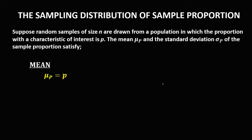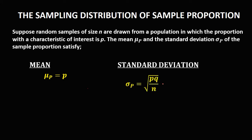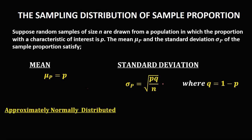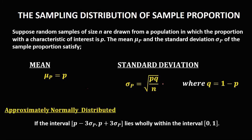For the mean, that's the same as P. The standard deviation of a sample proportion is the square root of P times Q over N, where Q equals 1 minus P. To check if approximately normally distributed, the interval P minus 3 times the standard deviation to P plus 3 times the standard deviation must lie wholly within the interval 0 to 1.